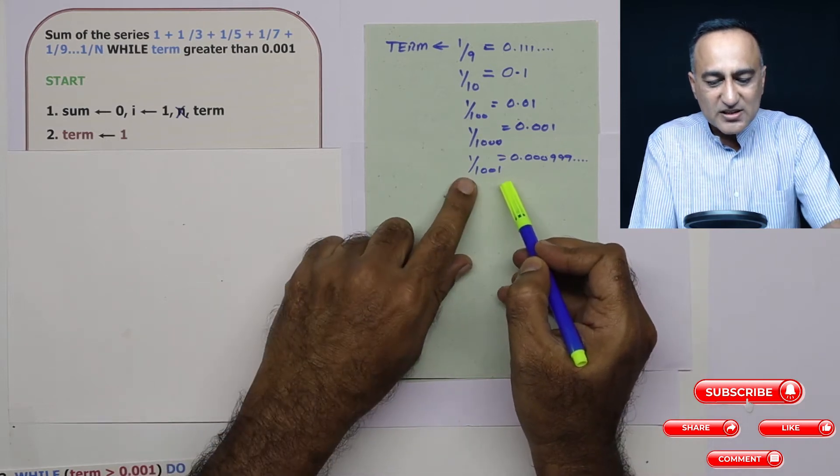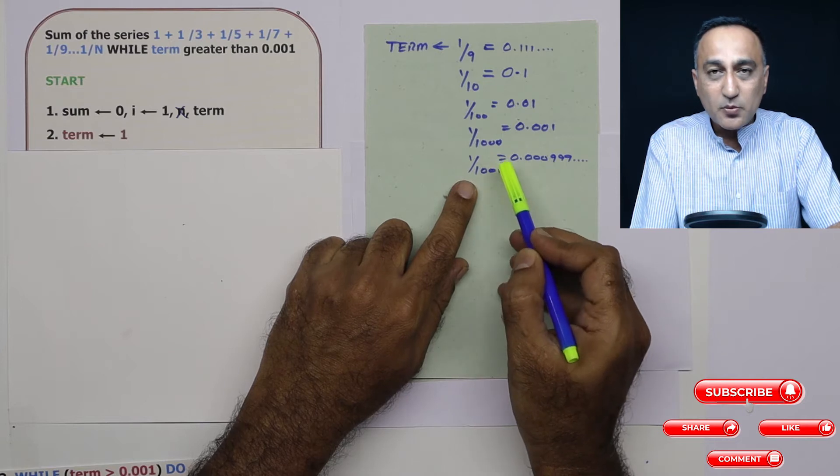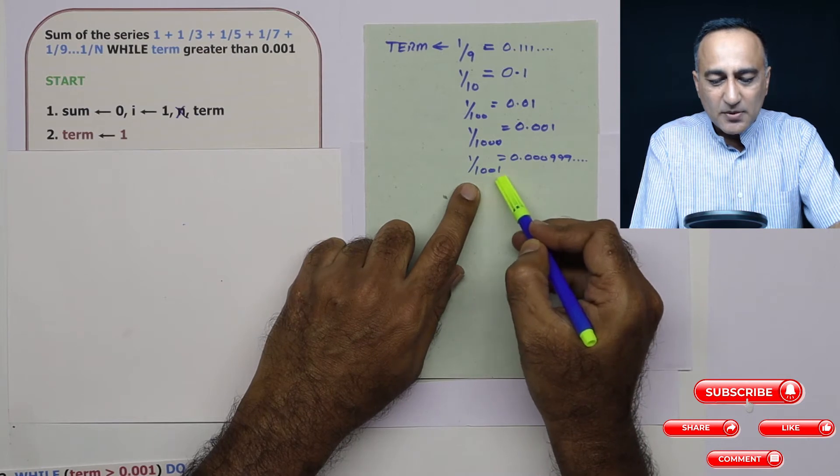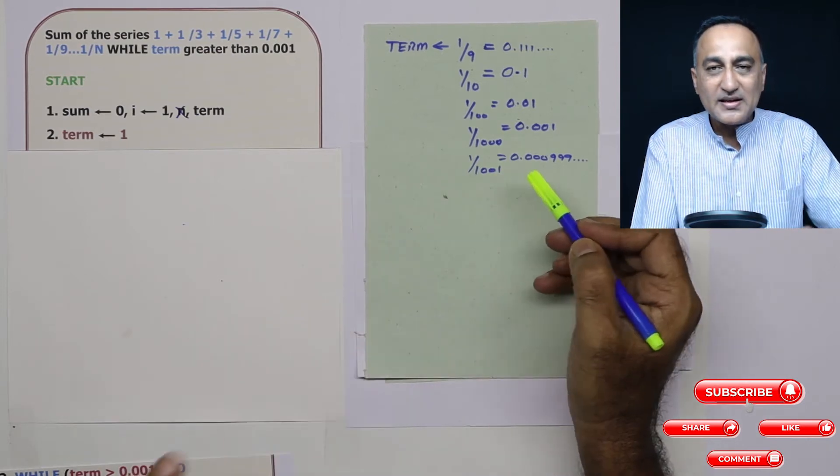So based on this number, the last value where I should be finding the sum is 1 upon 999. The minute the denominator becomes 1001, I should not add the denominator to the sum.